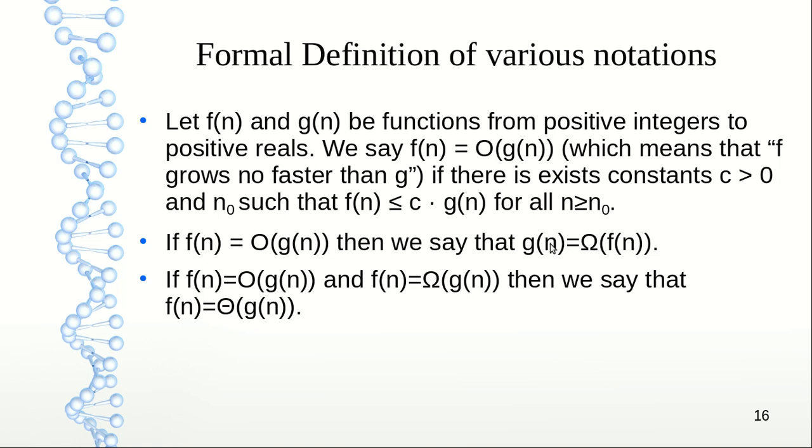Similarly here, g(n) equals f(n) if f(n) equals big O of g(n). It means that f(n) is sort of a lower bound of g(n). If f(n) is equal to big O of g(n) and at the same time f(n) is big omega of g(n), then we say that f(n) is big theta of g(n).